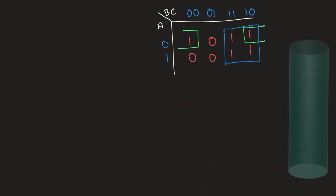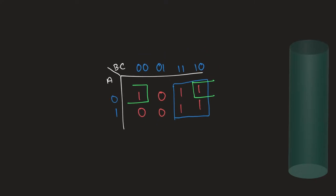Now solving it — this is the simplest part about K-maps. For the blue box: does the value of A change? Yes, it goes from 0 to 1, so A is not constant. Does B change? No, it stays 1 throughout the blue box — B is constant. Does C change? Yes, it changes. So we retain B, the only input that remains constant in the blue box, and since B is 1 we write it as B, not B-naught.